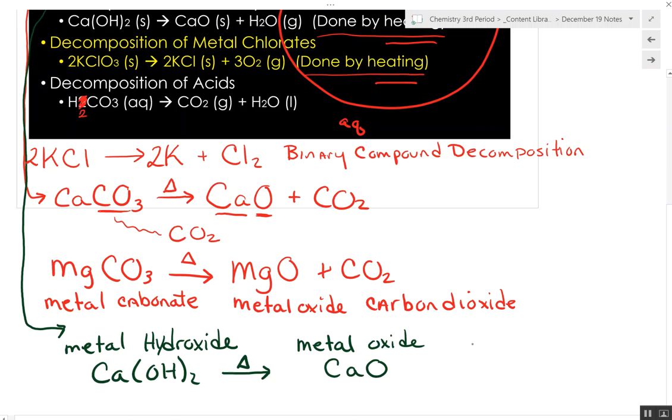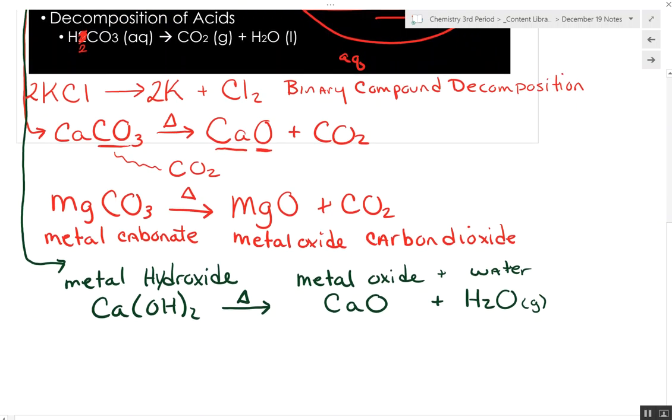So you end up with CaO. But in this case, the second decomposition product is water in the form of steam, so a little g there for gas. These are ones you're going to actually have to put in memory. So hydroxides decompose into an oxide and water. If I did this for sodium hydroxide, a group one, you heat it, it will decompose into sodium oxide and again, water as a gas.